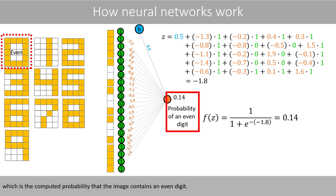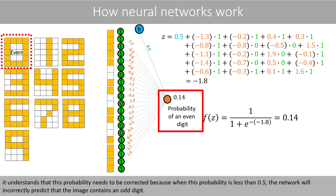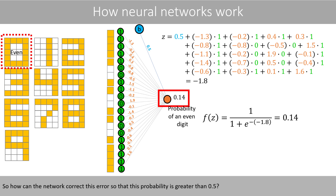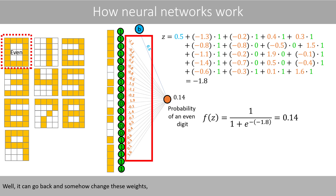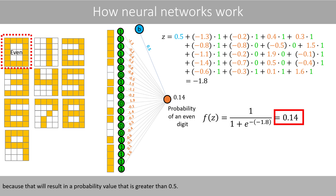This 0.14 is the computed probability that the image contains an even digit. Since we have told the network that this data comes from an even digit, it understands that this probability needs to be corrected, because when this probability is less than 0.5, the network will incorrectly predict that the image contains an odd digit. The network can go back and change these weights so that this calculation results in a positive value, which will result in a probability value that is greater than 0.5.